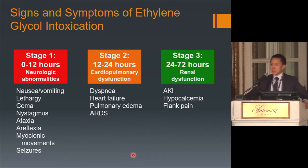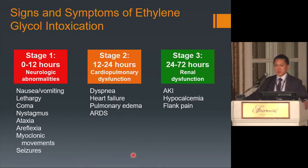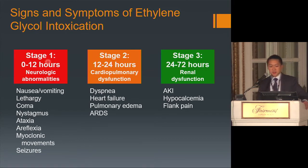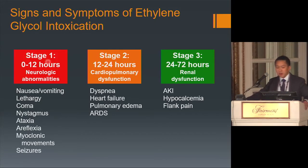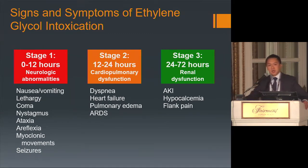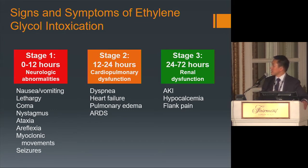Clinical symptoms of ethylene glycol intoxication evolve over three stages. In the early stage, neurological abnormalities predominate — lethargy, coma, nystagmus, ataxia, nausea and vomiting — when ethylene glycol levels are high and not yet metabolized. Within 12–24 hours, as metabolites form, cardiopulmonary dysfunction develops: dyspnea, heart failure, pulmonary edema, ARDS — most fatalities occur in this stage. Stage 3 occurs 24–72 hours after ingestion, when oxalate crystallizes and deposits in the kidney causing acute tubular injury, hypocalcemia, and flank pain.